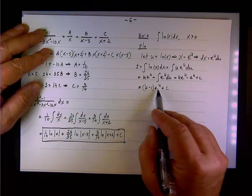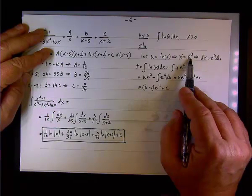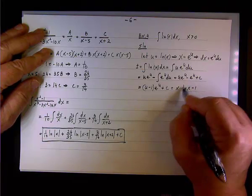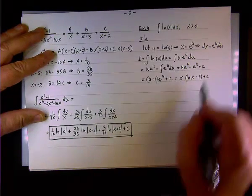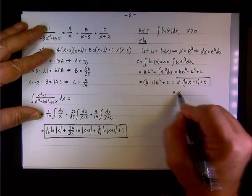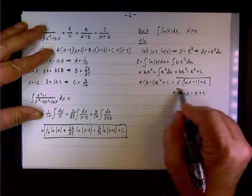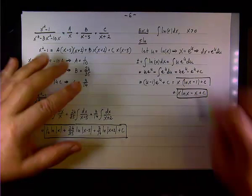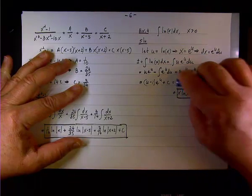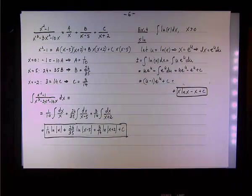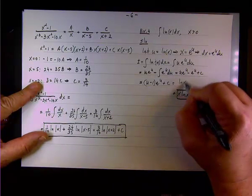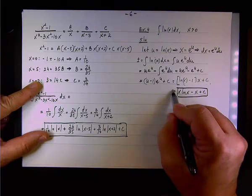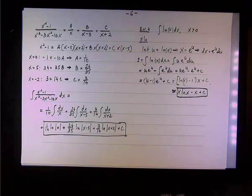Now u is the natural log of x, and e to the u is x. So the answer is x times (natural log of x minus one) plus c. We can also write it as x·ln(x) minus x plus c, but the factored form is preferred so you don't confuse the argument of the natural log.